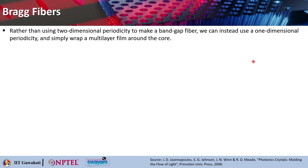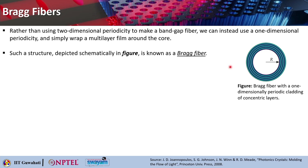Next we move on to the Bragg fiber. When we talk about Bragg fiber, rather than using two-dimensional periodicity to make a band gap fiber, here we basically use a one-dimensional periodicity and simply wrap a multi-directional film around the core. This particular structure is known as the Bragg fiber, which has got a radius R and you can see alternating dielectric material is basically forming this cladding. So you can say that it is a one-dimensionally periodic cladding of concentric layers.